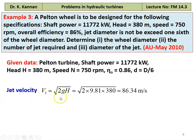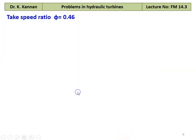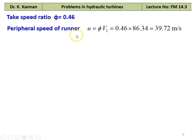Jet velocity V1 = √(2GH) = √(2 × 9.81 × 380) = 86.34 m/s. Total flow rate Q = shaft power / (ρGH × overall efficiency) = 11772 × 10³ / (1000 × 9.81 × 380 × 0.86) = 3.67 m³/s. Assuming speed ratio φ = 0.46, peripheral speed U = 0.46 × 86.34 = 39.72 m/s.